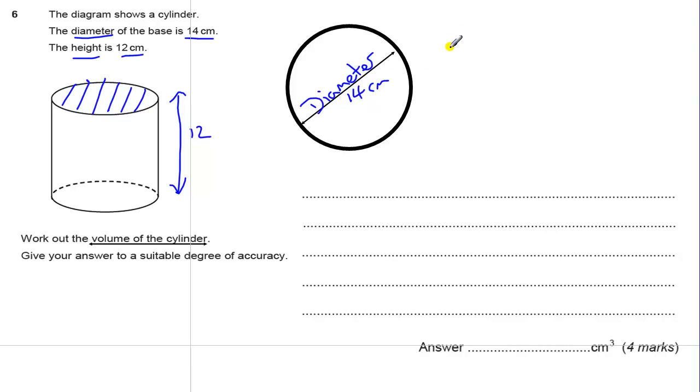And for the area of a circle, we need pi times the radius squared, which is the radius times the radius. We're told the diameter is 14, so the radius must be 7 because that's halfway across.